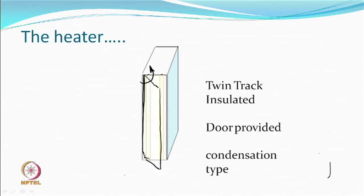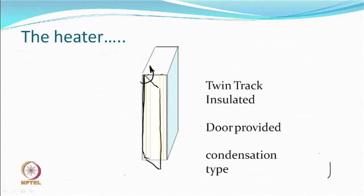The heater must be properly insulated; a door is provided so after running the machine you can close it. Heating is generally done by condensation type — there is a fluid inside which evaporates in the space just behind the heater plate, so the temperature difference is minimal and more uniform heating can take place. This is essentially your primary heater.